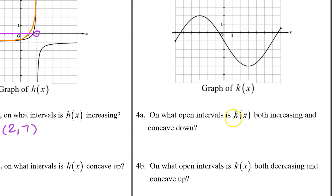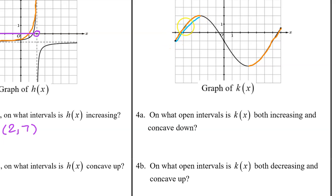For 4a, on what open intervals is k of x both increasing and concave down? k of x is increasing for two portions of the graph. We need the part that is also concave down, which is only the first orange piece. k of x is concave down from around negative six to about negative three, and then concave up after that. So k of x is increasing and concave down on the interval from negative six to negative three.